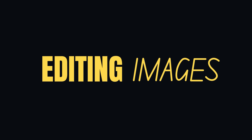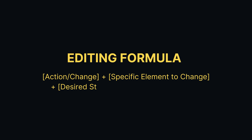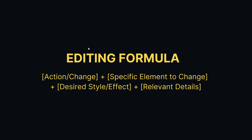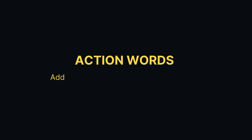Next up, we're going to look at editing images, which is another very popular use for AI image generators. This is the editing formula: action or change, specific element to change, desired style or effect, and the relevant details. One of the most important things to focus on is action words. There are five action words to really focus on: add, change, make, remove, and replace.